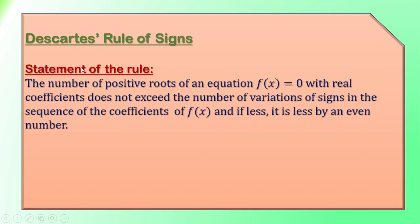To find this, we have to know this rule, which is Descartes' Rule of Signs. The statement of the rule says that the number of positive roots of an equation f(x) = 0 with real coefficients does not exceed the number of variations of signs in the sequence of the coefficients of f(x), and if less, it is less by an even number.